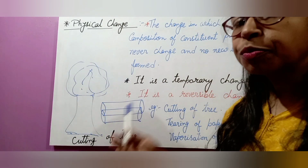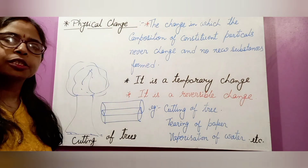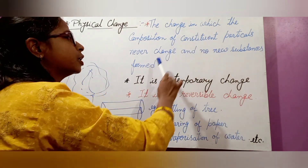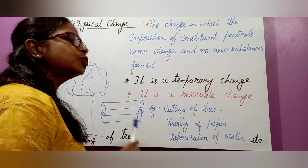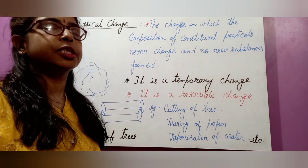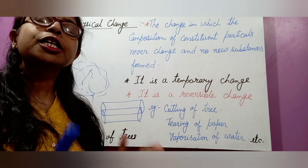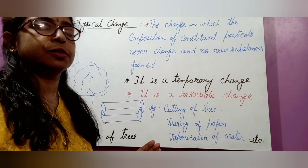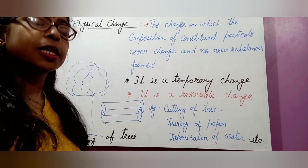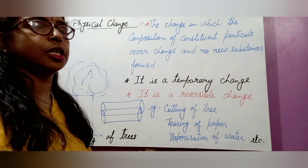Cutting of a tree — which type of change is it? It is a physical change. Cutting of a tree is a physical change. So what is physical change? It is the change in which the composition of the constituent particles never changes and no new substances form. In physical change, only the color, the states, and the size of the substance can be changed, but no new substances form.